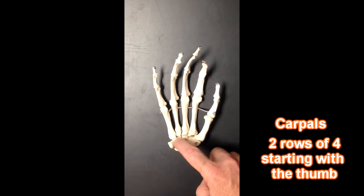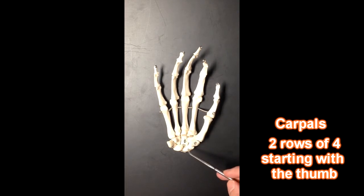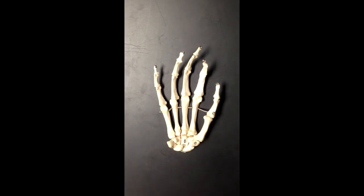One, two, three, four. If I use the pointer it might be easier for you to see. One, two, three, four, and then one, two, three, four. Now they do have names, and my best recommendation would be to memorize the names, start with the thumb, and then count over from there.